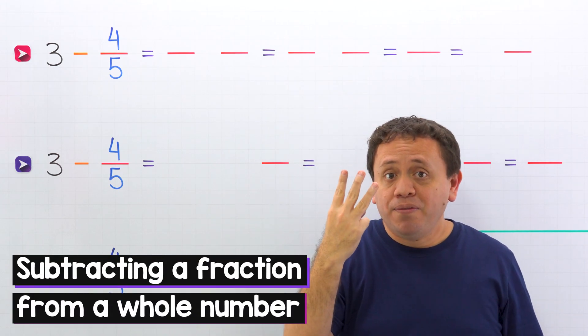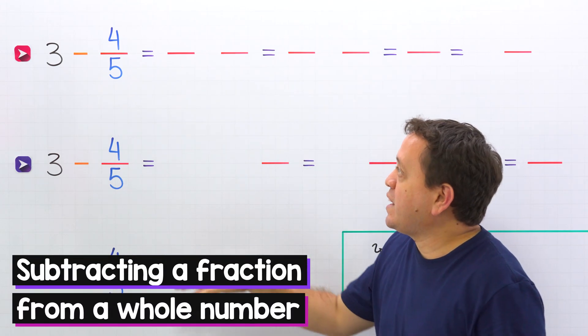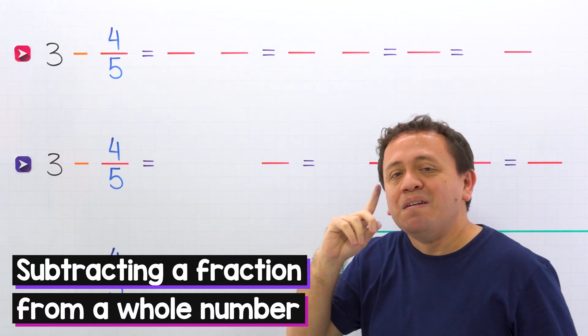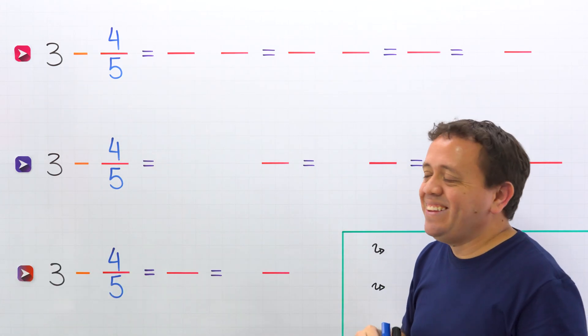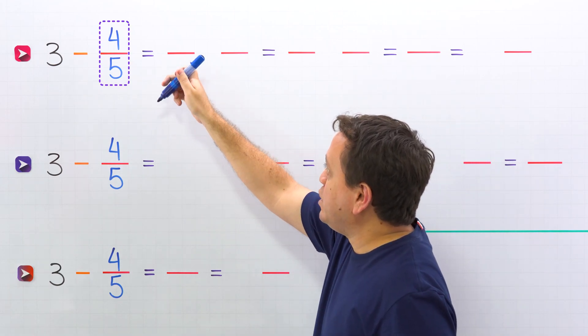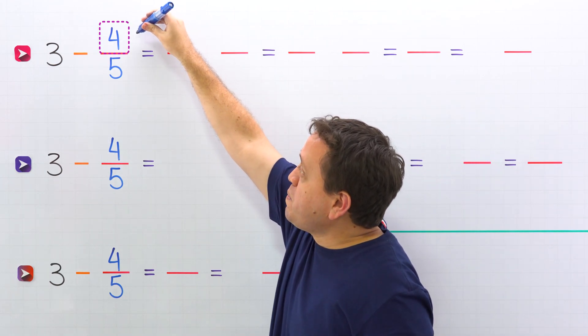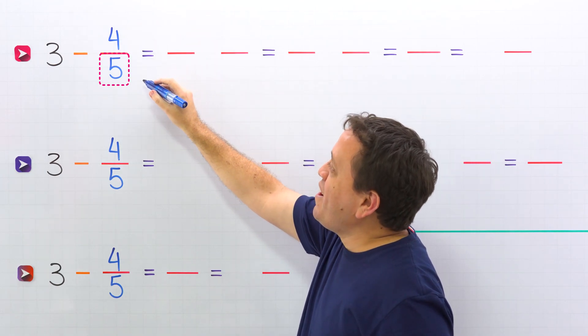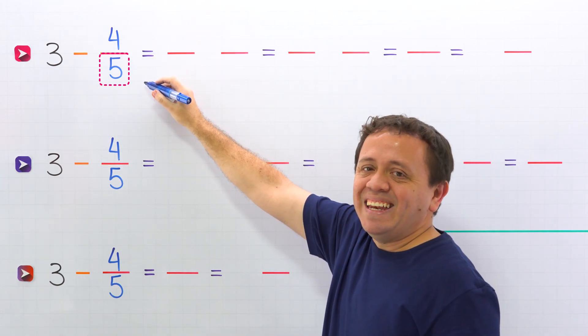Hi! Today I'm going to show you 3 different ways for subtracting a fraction from a whole number. Before getting into it, never forget that in a fraction like this one, the top number is the numerator, and the bottom number is the denominator.